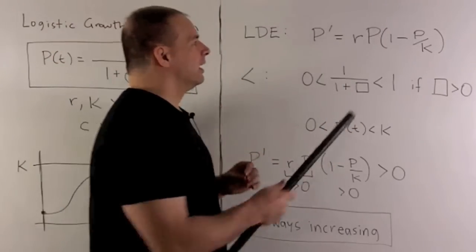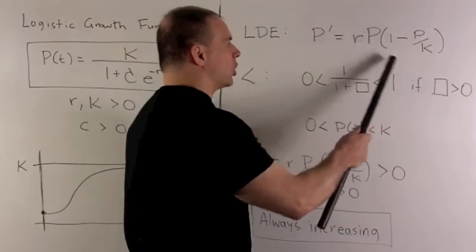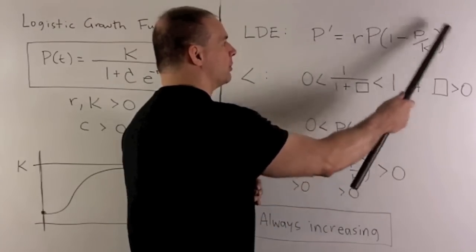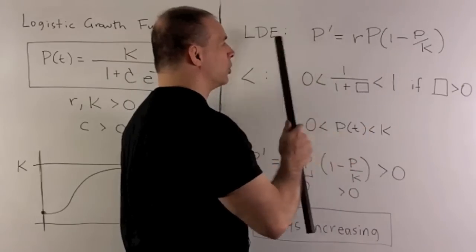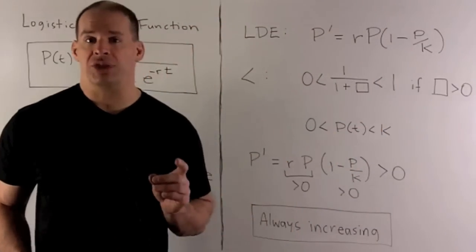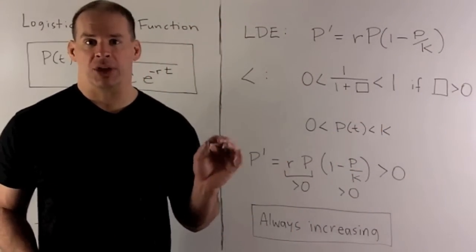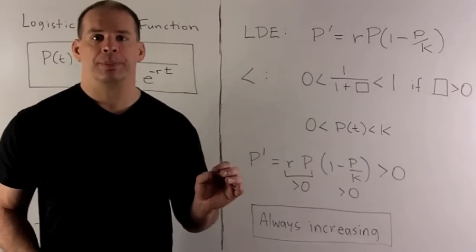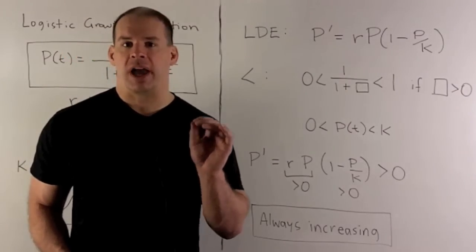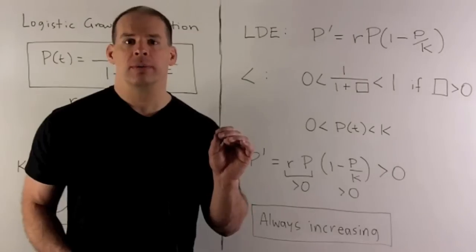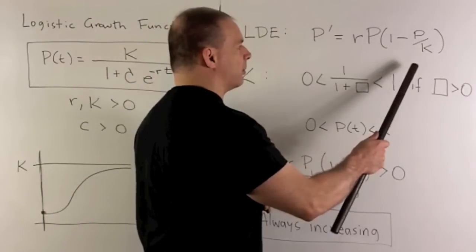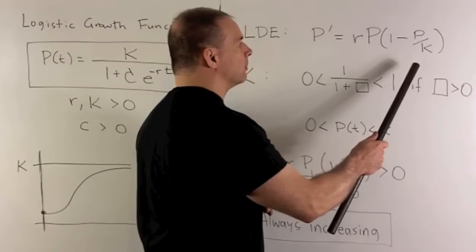If we let K get large without bound, then the P over K term just turns into zero, and we're looking at the differential equation for exponential growth. So all we're doing is taking the equation for exponential growth and putting a limit on the size of the population.